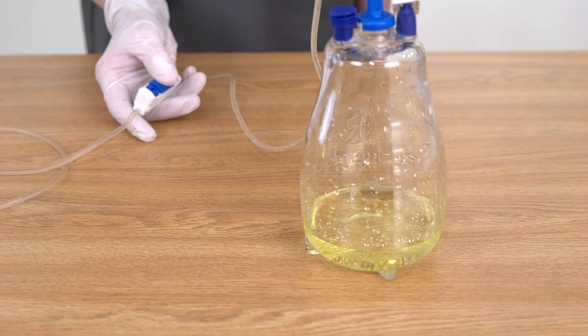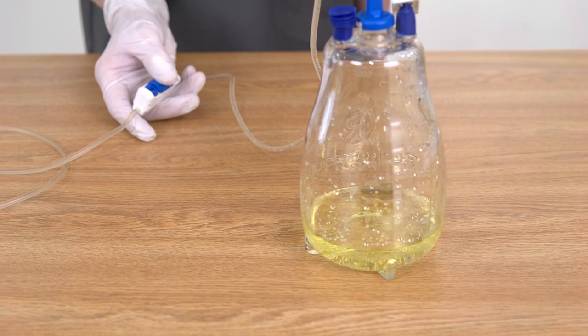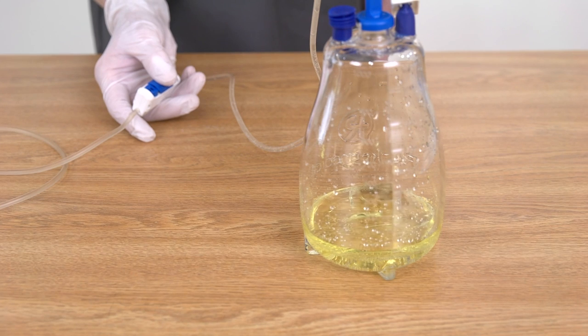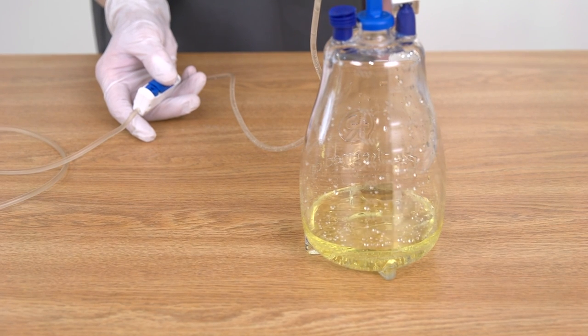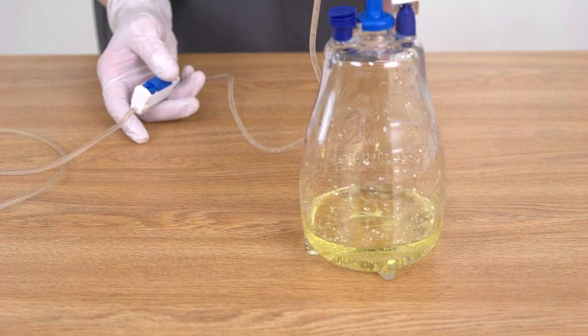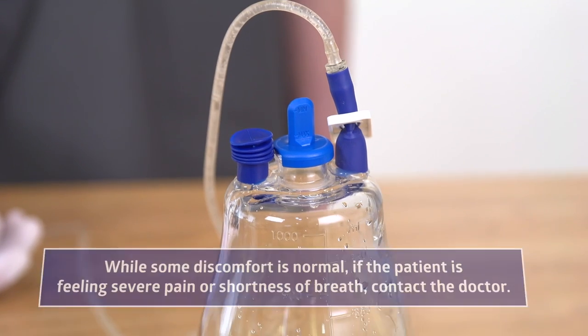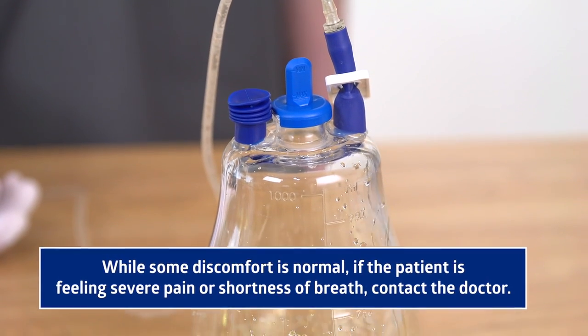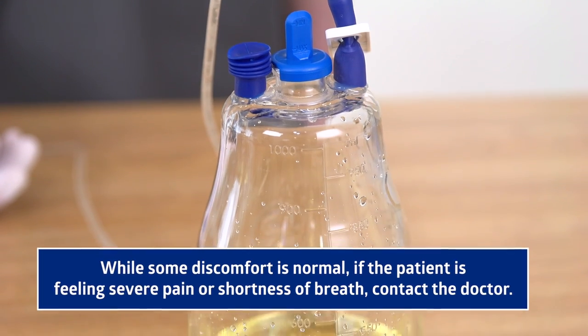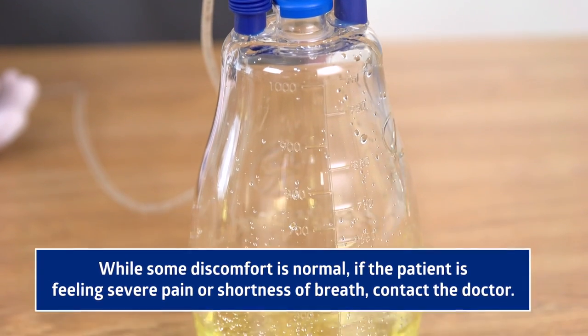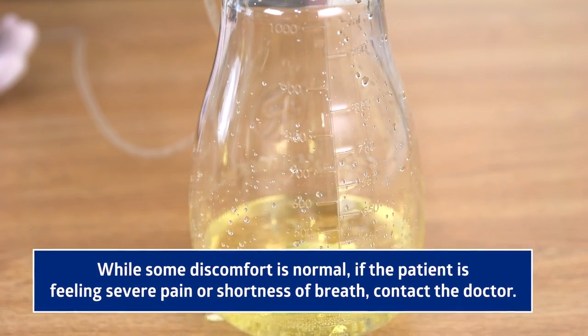If the patient experiences pain or discomfort, decrease the pressure on the button to reduce or stop the flow. To increase the flow, depress the button further with your thumb or use the slider. While some discomfort is normal, especially starting or ending drainage, if the patient is feeling severe pain or shortness of breath, contact the doctor.